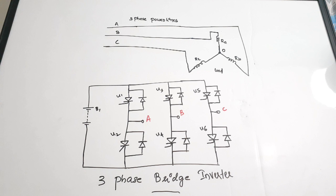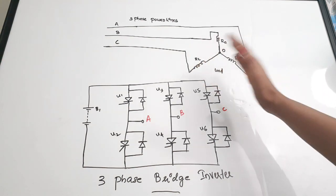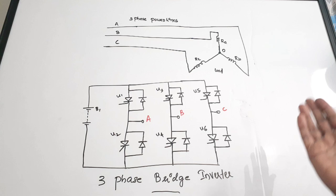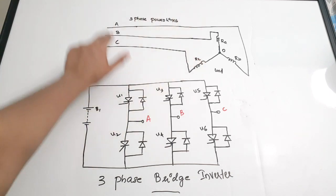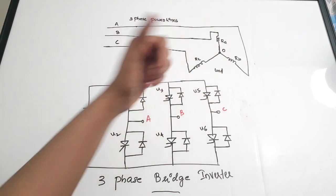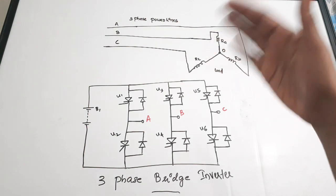The last type of inverter is the three-phase bridge inverter. It has three arms that are delayed by an angle of 120 degrees to generate a three-phase AC supply. It has three balanced loads separated by 120 degrees each, acting as the three-phase power lines.